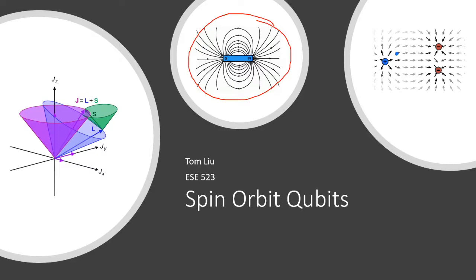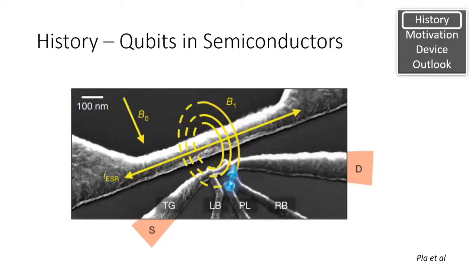However, the special thing about spin-orbit qubits is that these electrons can be manipulated through their spin orbitals through the use of electric fields.